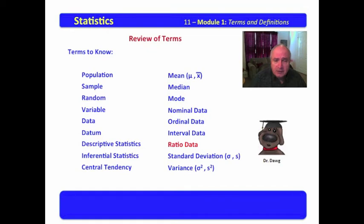Ratio data are data which make sense to compare. They are ranked, they are equally spaced, but comparison can be done. Generally, ratio data are said to have an absolute zero.